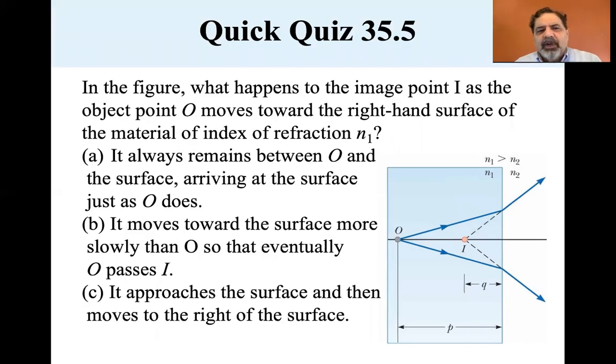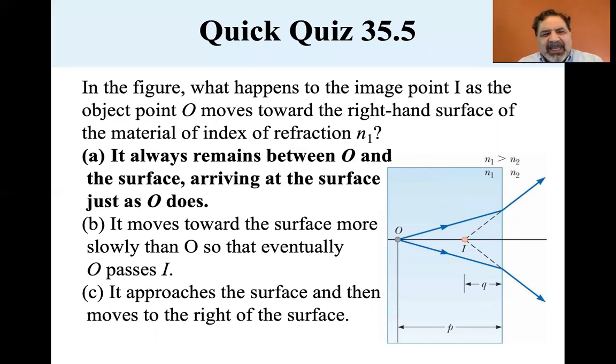In the figure, what happens to the image point I as the object point O moves toward the right-hand surface of the material of index of refraction N1? And the answer is A, it always remains between O and the surface, arriving at the surface just as O does.